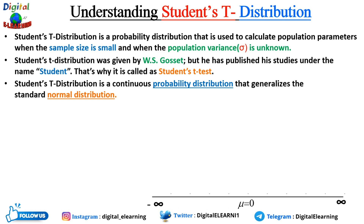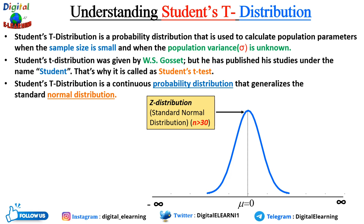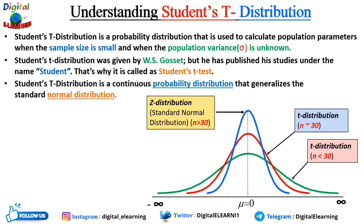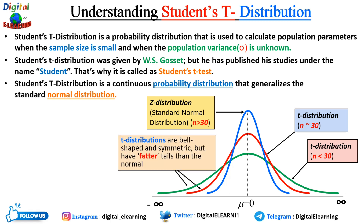The student t-distribution is a continuous probability distribution that generalizes the standard normal distribution. The shape of the t-distribution depends on its degrees of freedom. In the diagram, the blue curve is a standard normal distribution (z-distribution) because the sample size is greater than 30. The red curve is a t-distribution with sample size close to 30, and the green curve is also a t-distribution but with sample size less than 30. The t-distributions have flatter, wider tails than the normal distribution.